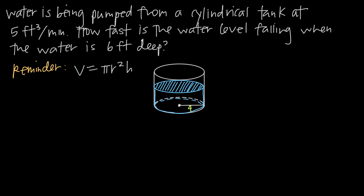What we want is an equation that relates the volume of the water to the height of the water. We have this cylindrical tank holding a certain amount of water. The volume of a cylinder is V = πr²h, where r is the radius and h is the height. The water inside the cylindrical tank is going to be in the shape of a cylinder, so we'll use this equation to relate water volume to water height.